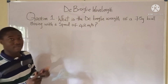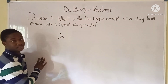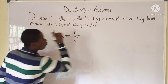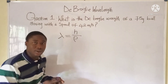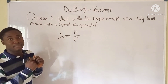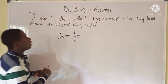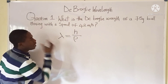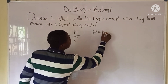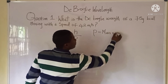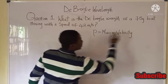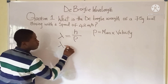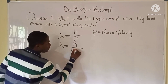De Broglie's wavelength is given with the symbol lambda and has the formula h over momentum. Here h refers to Planck's constant, and momentum is given by mass times velocity — or mass times speed. Bringing this into the formula, de Broglie's wavelength becomes h over mv.